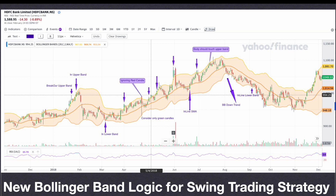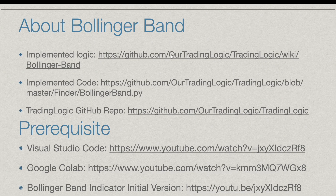From the Python code we are finding the breakout of the upper band, the prices in the upper band, the prices in the lower band, the inline prices, and also finding the trend based on the Bollinger Band indicator. You can find this picture on GitHub — this is the link. You can find the Bollinger Band picture which we saw in the previous slide.